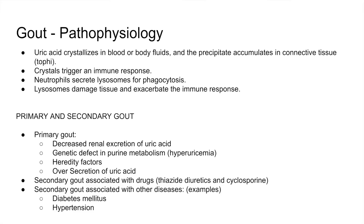Let's move on to gout. The pathophysiology involves uric acid buildup in the blood or body fluids. This uric acid accumulates in the connective tissue, forming tophi. These crystals trigger an immune response, and neutrophils secrete lysosomes to phagocytose the precipitative accumulation of uric acid crystals. Lysosomes then damage tissue and exacerbate the immune response.